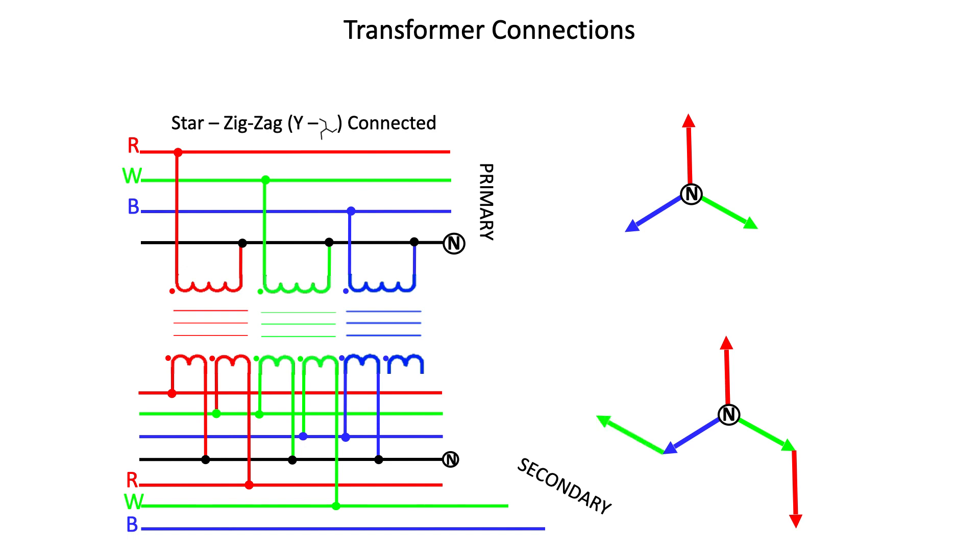The blue unspotted terminal of the secondary is connected to the blue system lines and buses. The other blue spotted terminal is connected to the spotted terminal of the red terminal of the other secondary winding, completing the vectors to look like this.